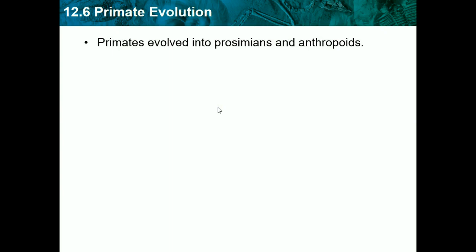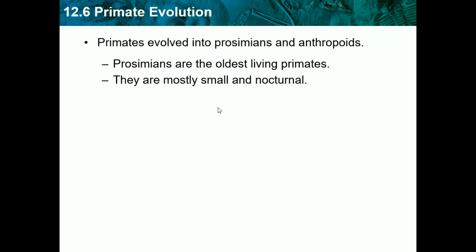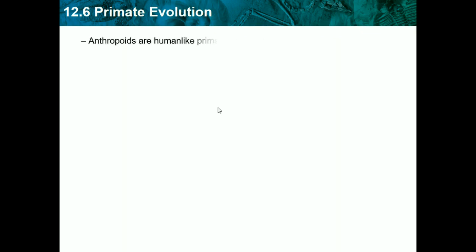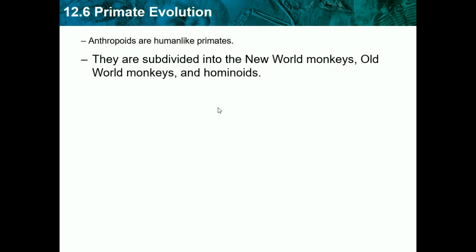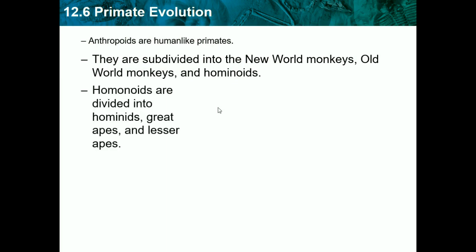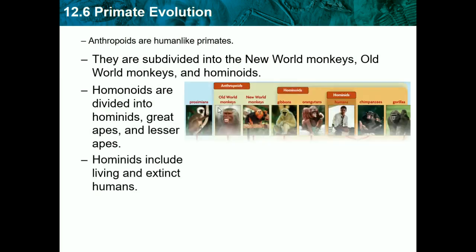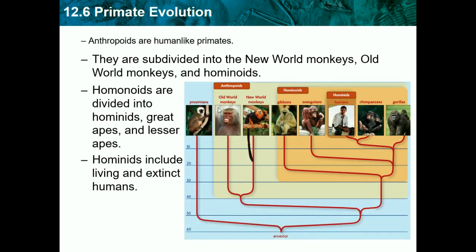Primates evolved into prosimians and anthropoids. Prosimians are the oldest living primates — they are mostly small and nocturnal. Anthropoids are more human-like primates, subdivided into new world monkeys, old world monkeys, and hominids. Hominids are divided into hominids, great apes, and lesser apes. Hominids include living and extinct humans. This flowchart shows how everything split up, but the key point is that humans came late in the cycle and were hominids.